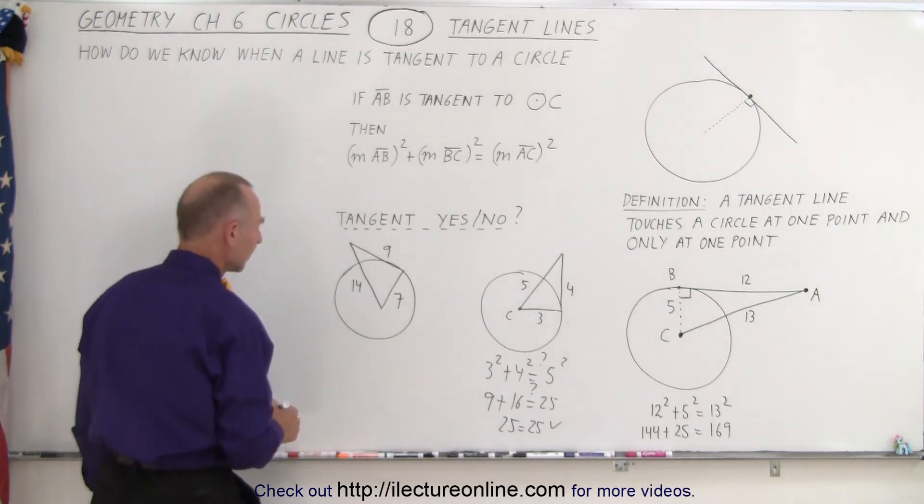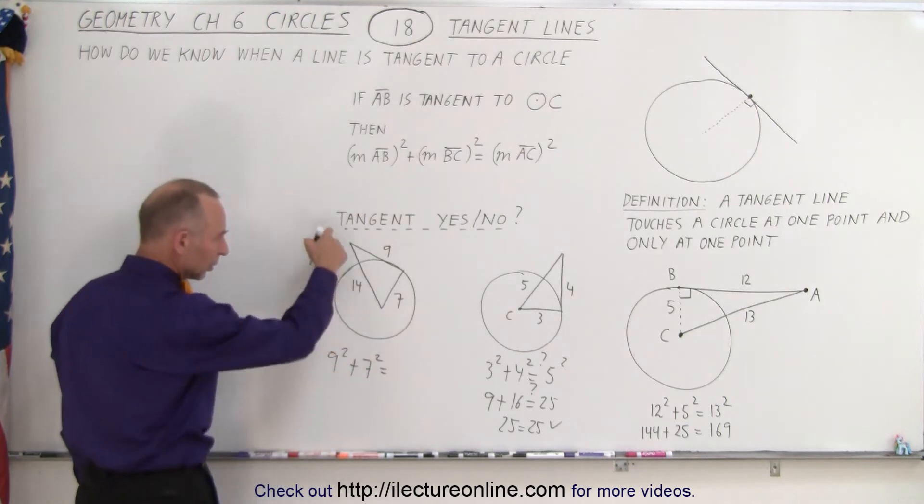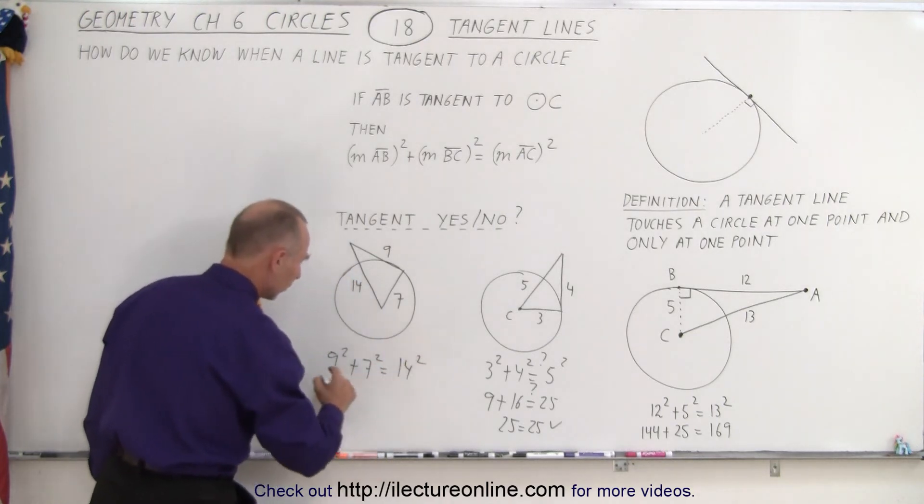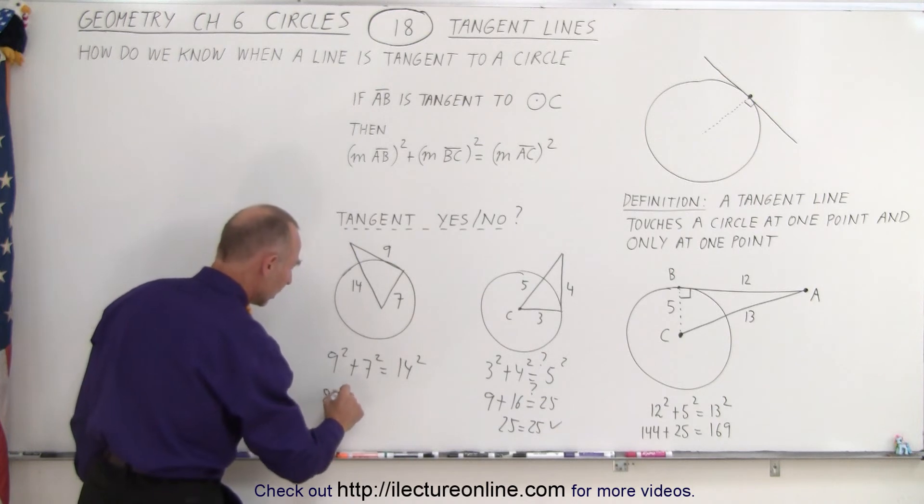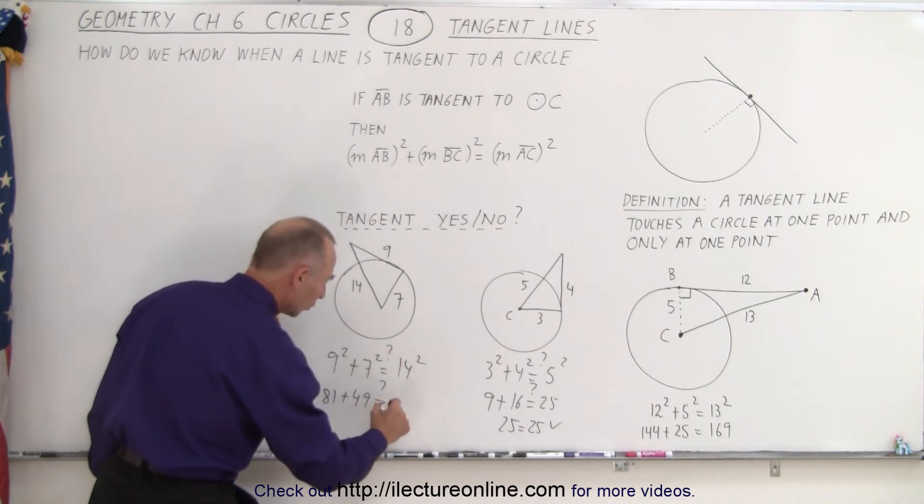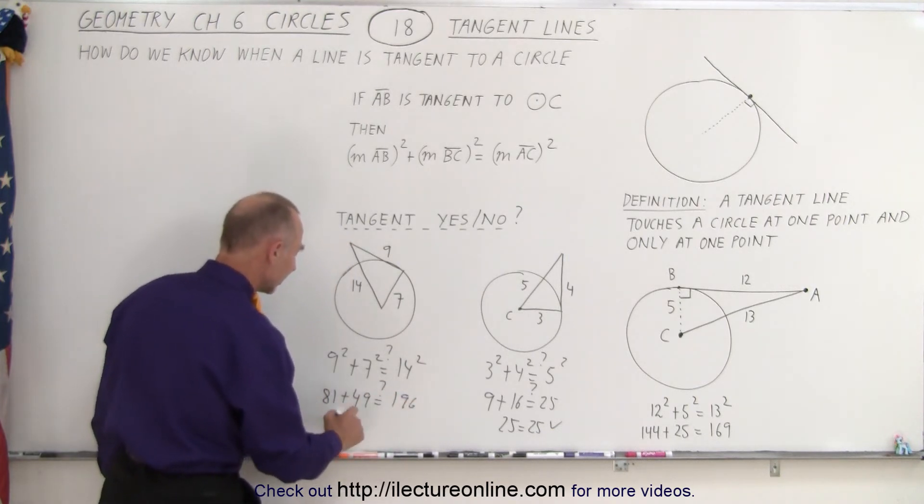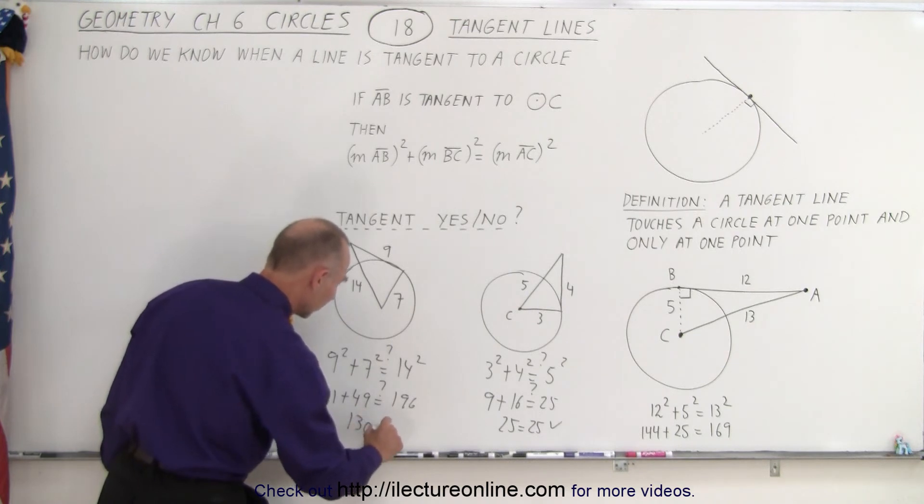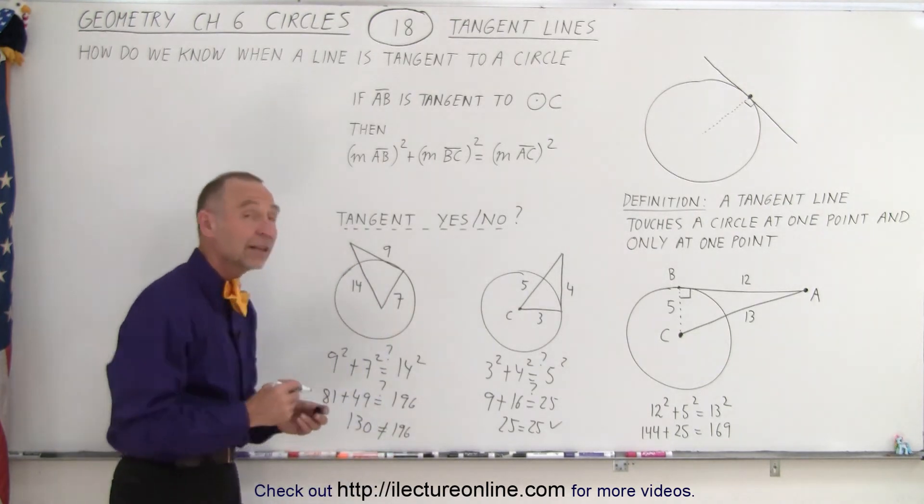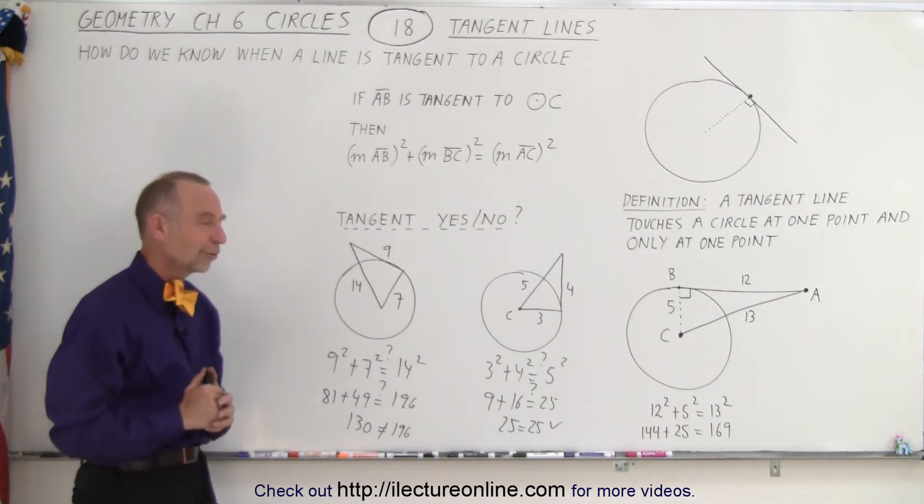We do the same over here, and again, we can say that 9 squared plus 7 squared should equal the diagonal, which is 14 squared. So that would be 81 plus 49, question mark, is that equal to 196? And when we add these two together, that's 90, that's 130. Well, 130 is not equal to 196, so we can confidently say that that line is not tangent to the circle.